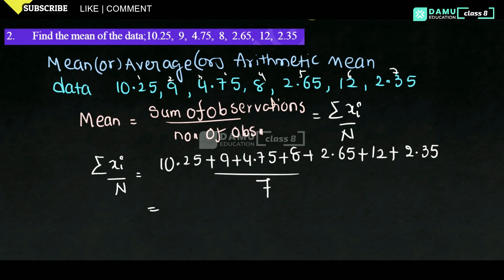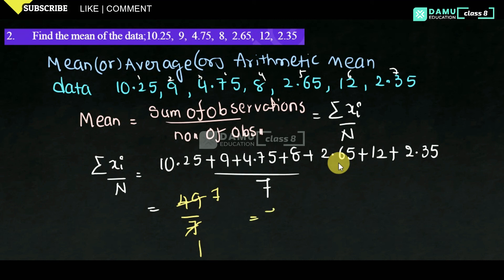Let's find the summation step by step: 10.25 plus 9 equals 19.25; plus 4.75 gives 24; plus 8, plus 2.65, plus 12, plus 2.35. The total summation gives 49. So mean equals 49 divided by 7, and 7 ones are 7 — so the mean equals 7.